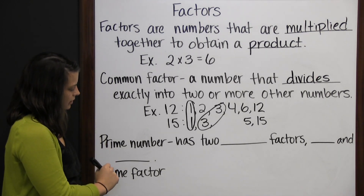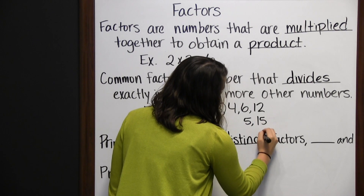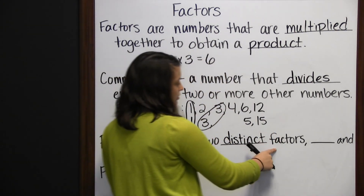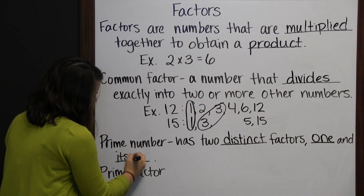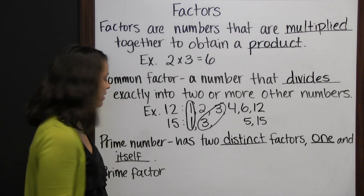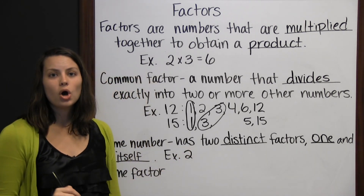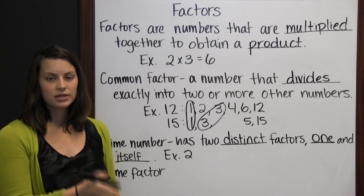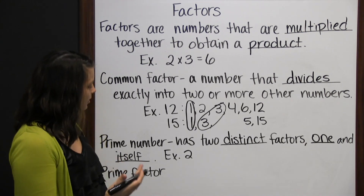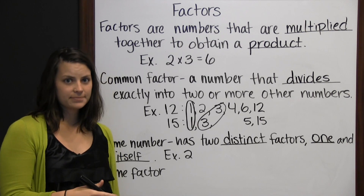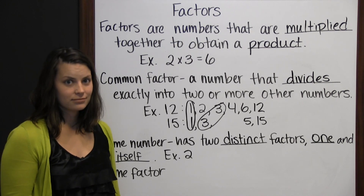Prime number. Prime numbers have 2 distinct — which means different — factors: 1 and itself. The very first prime number is 2, because the only factors of 2 are 1 and 2. 1 times 2 is 2. Some people think that 1 would be the first prime number, but 1 only has 1 factor: 1 times 1 is 1.